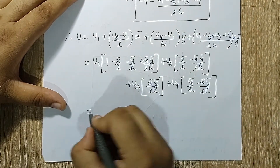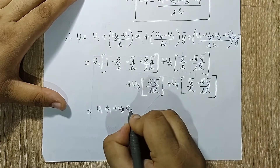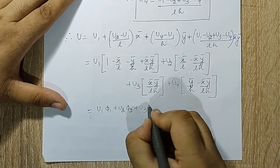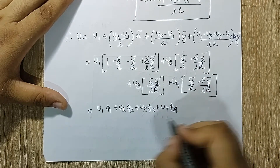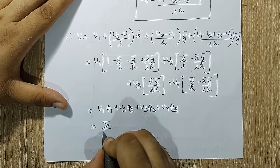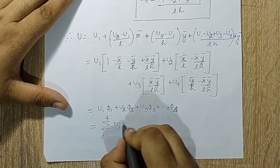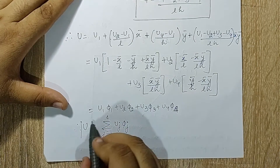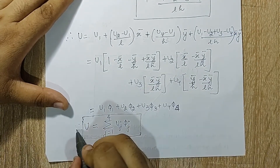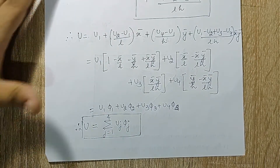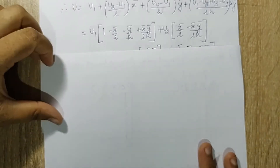Writing this in compact form: u = u1*φ1 + u2*φ2 + u3*φ3 + u4*φ4, or in summation form: u = Σ (j=1 to 4) uj * φj. This is how displacement u can be represented using shape functions.